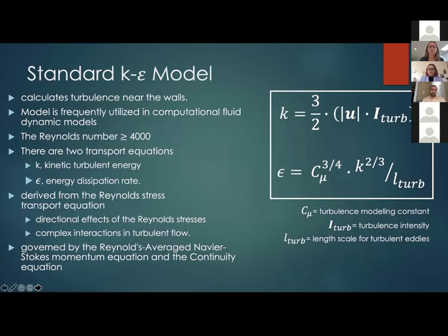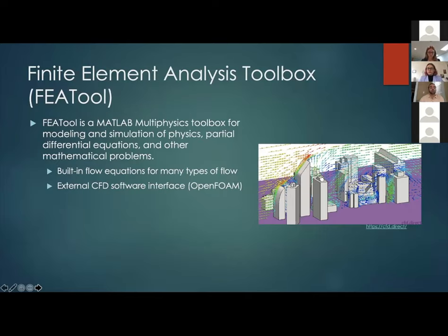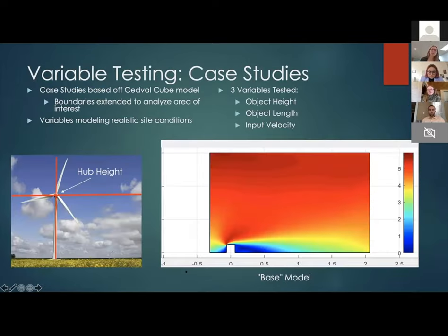So this is the model we chose. This is the standard k-epsilon model. It calculates turbulence near the walls of an obstruction or of our model. The software we used was called the FEA tool, which stands for Finite Element Analysis Toolbox.